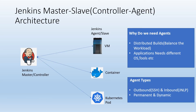This is Jenkins distributed architecture, which is also called as master-slave or controller architecture. In this architecture we create jobs inside master, and these job configurations will be stored in the master. These jobs will be executed in master or in slaves, meaning the workload of the jobs will be offloaded to agents. These agents can be created inside a VM, a container, or a Kubernetes pod.